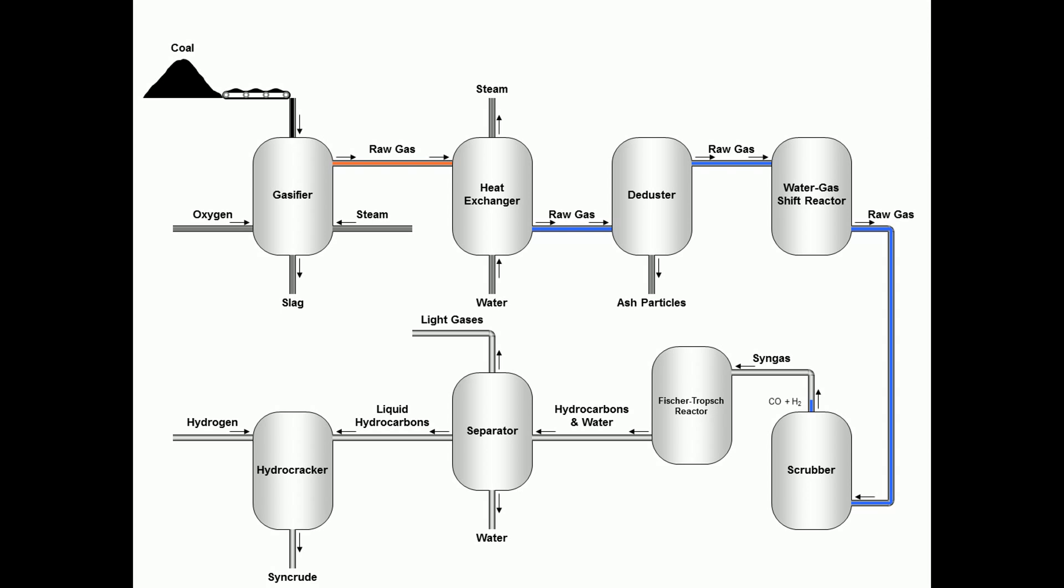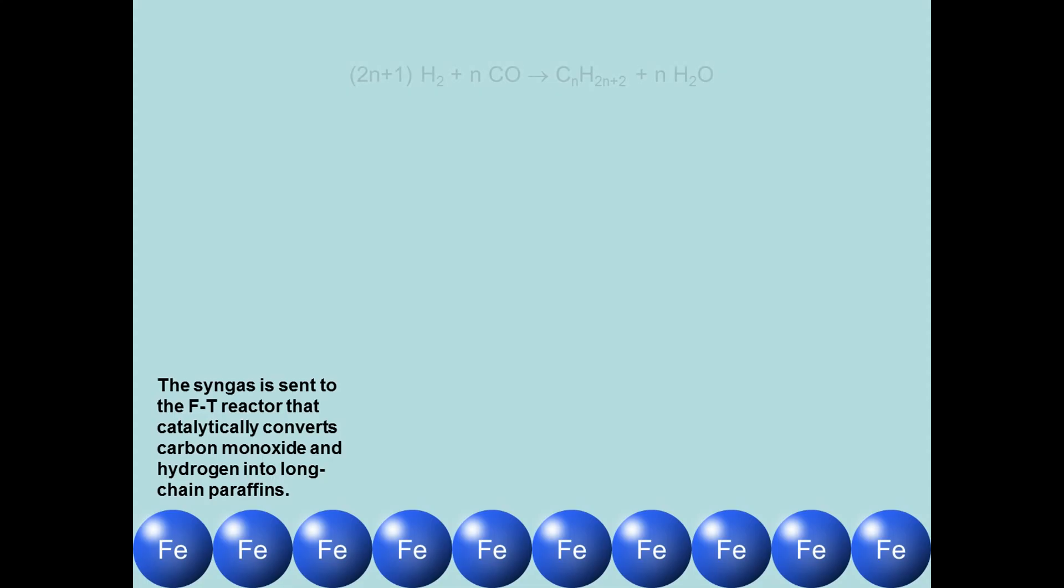The syngas is then sent to a Fischer-Tropsch reactor. In the Fischer-Tropsch reactor, the syngas catalytically converts carbon monoxide and hydrogen into long-chain hydrocarbons. This is the main reaction for the coal-to-liquid process.